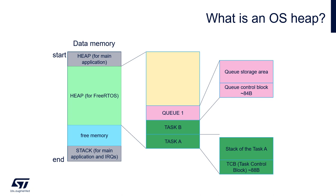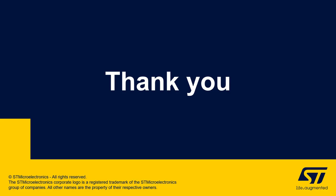The first memory area is the control block, which contains main settings of the given component like its name, size, and other OS components it is connected to. The second is a stack area used to store temporary variables. We will discuss this in more detail in one of the next sections of this training.